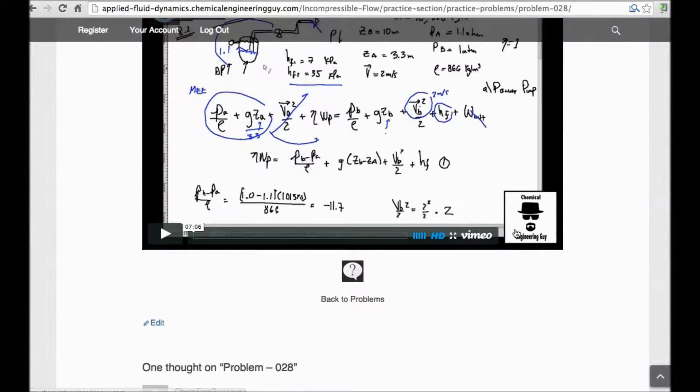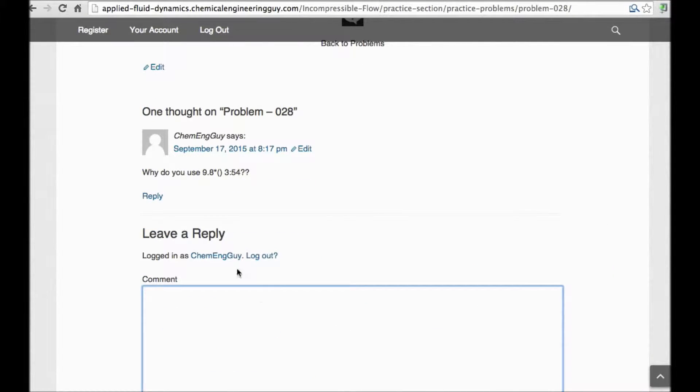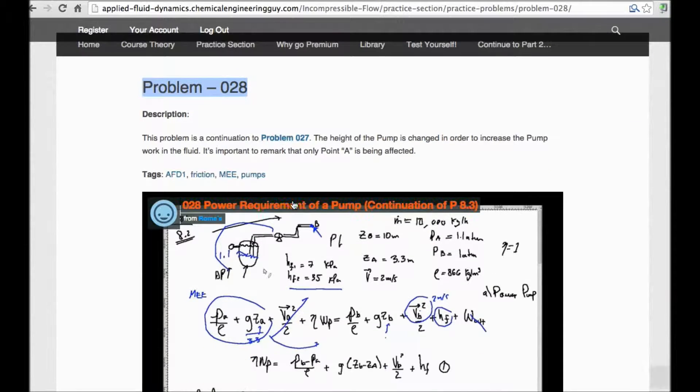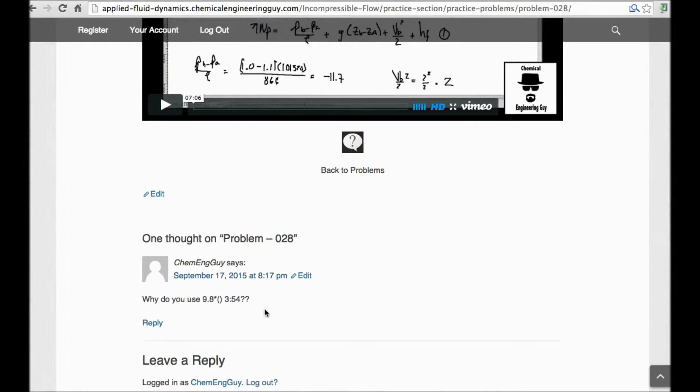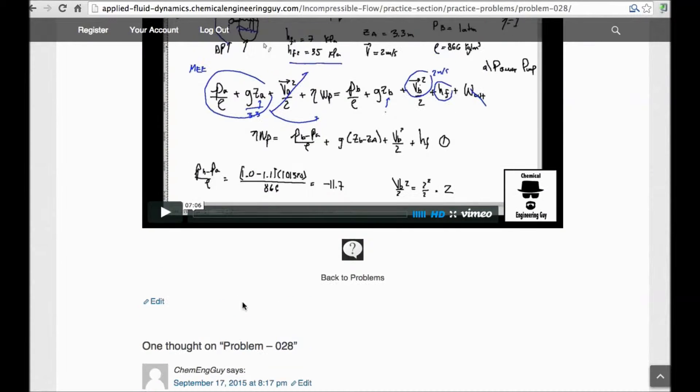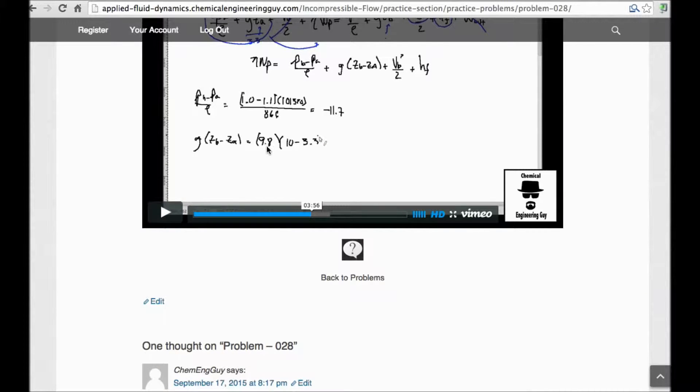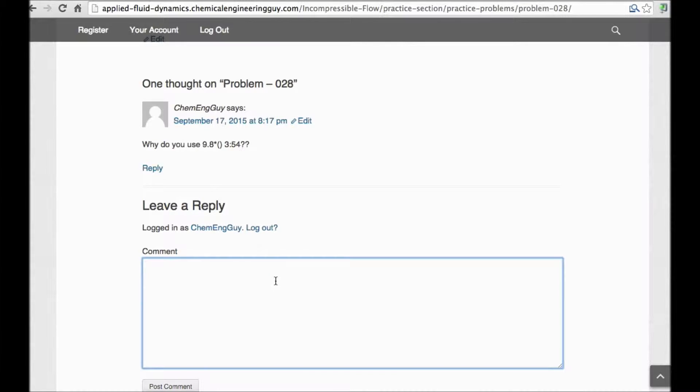So guys, don't forget that you can always ask plenty of questions in the comment section right here. For example, we are right now in 0.28. If you have any doubt, for example, I added this one for an example. Whether you use 9.8 in minute 3.54. So I go 3.54, and you got this 9.8. I will answer you that this is due to the fact that I'm using gravity in the SI unit system, which is 9.8. You can leave it here and I will answer you as soon as possible.